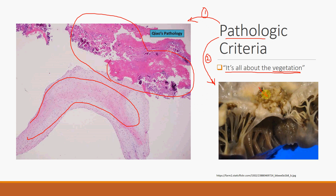The second pathologic criterion is not histology but microbiology. For instance, you take a sample of the vegetation at the anterior leaflet of the mitral valve, culture it, and organisms begin to grow. That positive culture of the vegetation also meets pathologic criteria. You only need either one of these two pathologic criteria to define a definitive infective endocarditis diagnosis.